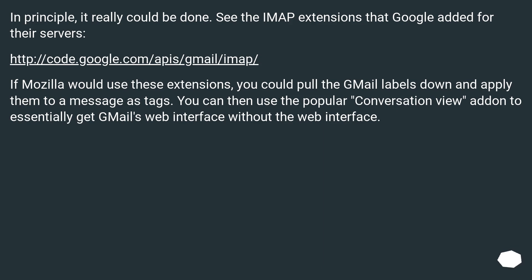In principle, it really could be done. See the IMAP extensions that Google added for their servers at this URL. If Mozilla would use these extensions, you could pull the Gmail labels down and apply them to a message's tags. You can then use the popular conversation view add-on to essentially get Gmail's web interface without the web interface.